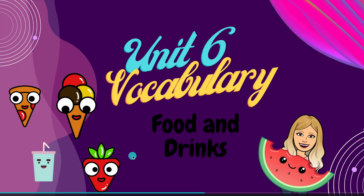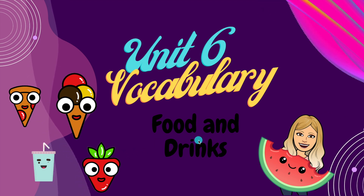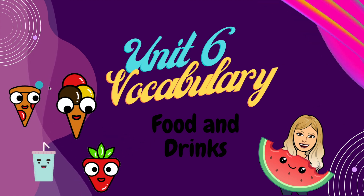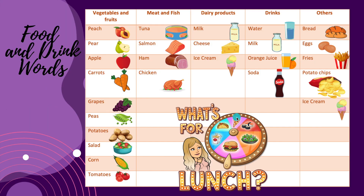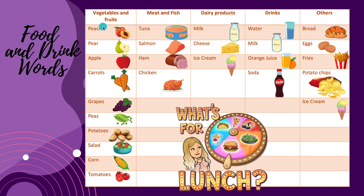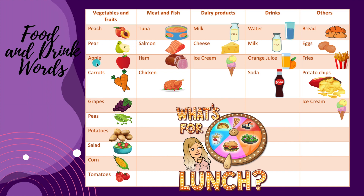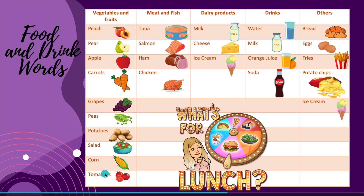Let's talk about vocabulary of unit number 6 — food and drink. I tried to make categories: vegetables and fruit, meat and fish, dairy products, drinks, and others. Each word has a picture so you can understand better. Vegetables and fruit: peach, pear, apple, carrots, grapes, peas, potatoes, salad, corn, tomatoes.